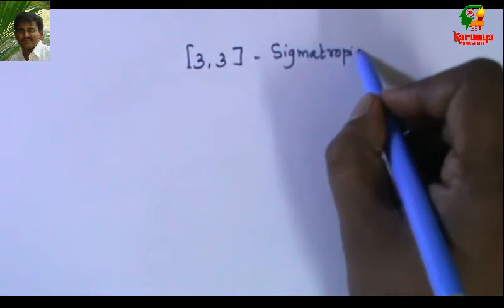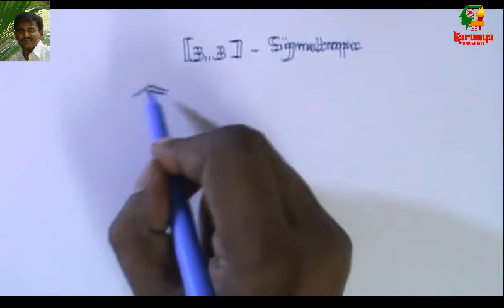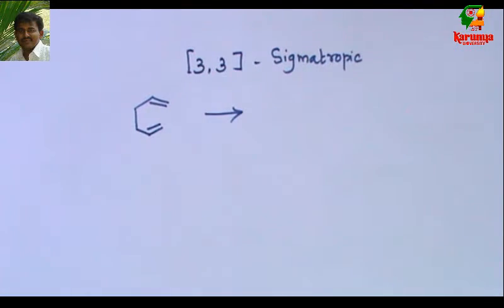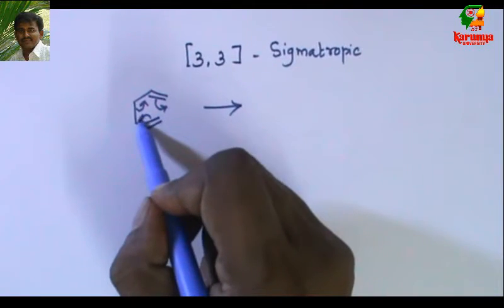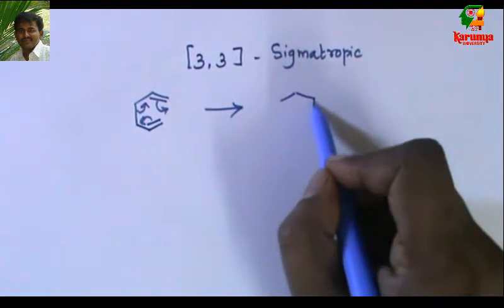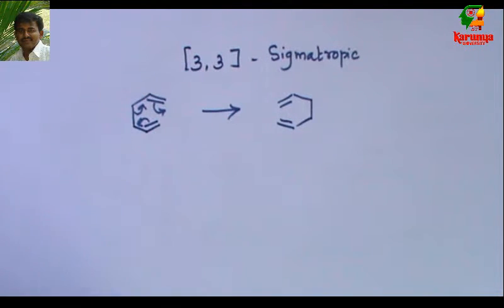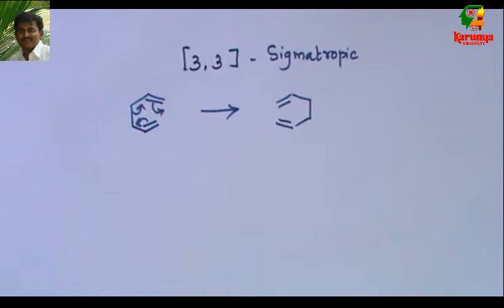At minimum, one question is asked from 3,3-sigmatropic rearrangement in the CSIR exam every year. The first type is cope rearrangement: this 1,5-diene rearranges, and in a particular case where both the starting material and the product are the same, it is called a degenerate cope rearrangement.